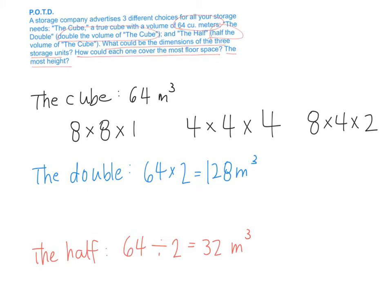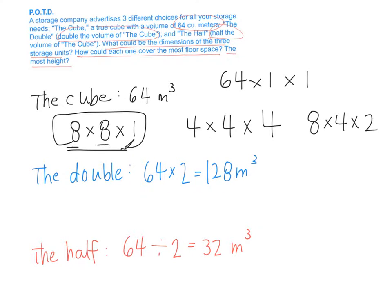If my length is 64 meters and my width is 1 meter and my height is 1 meter, would that cover the most floor space? Because the area of the floor would be 64. Or if 8 is the length and 8 is the width, could that also cover 64 square meters? So as long as your area of the floor — the base area — is 64, you have the right answer.